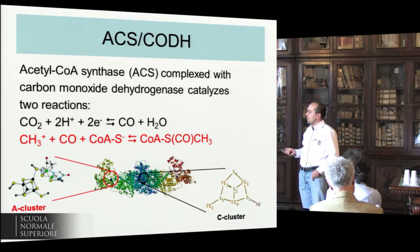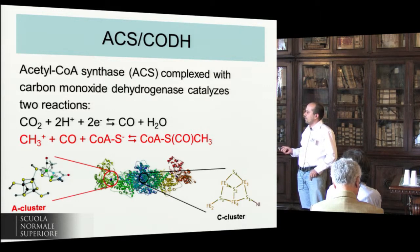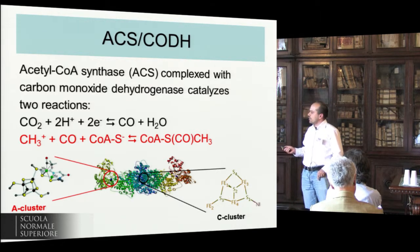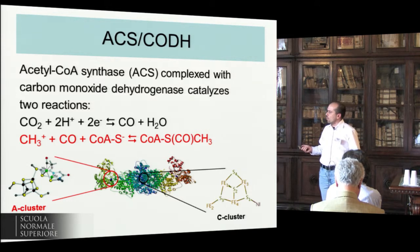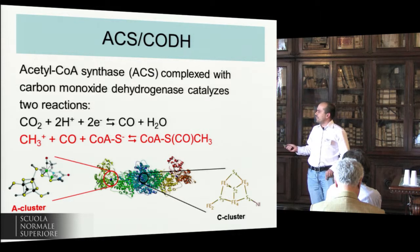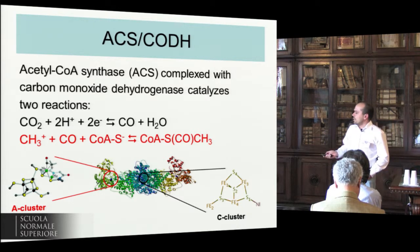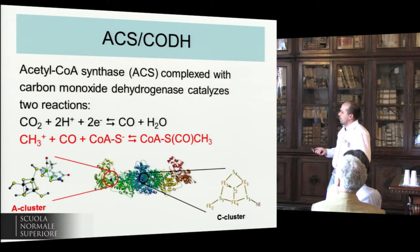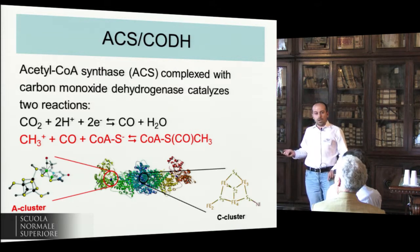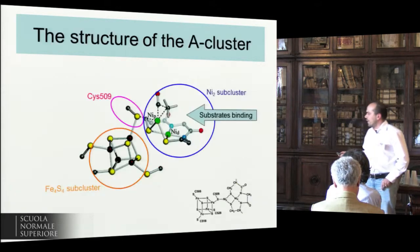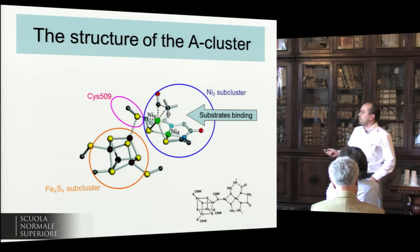On the other functional part of this big enzyme, we have another active area with an active site called the A-cluster, which is able to use the CO produced in the other reaction to produce acetyl-Coenzyme A, starting also from a CH3+ cation. We have been focusing in particular, for the moment, on this part of the story, on this active site, which has some particular features.